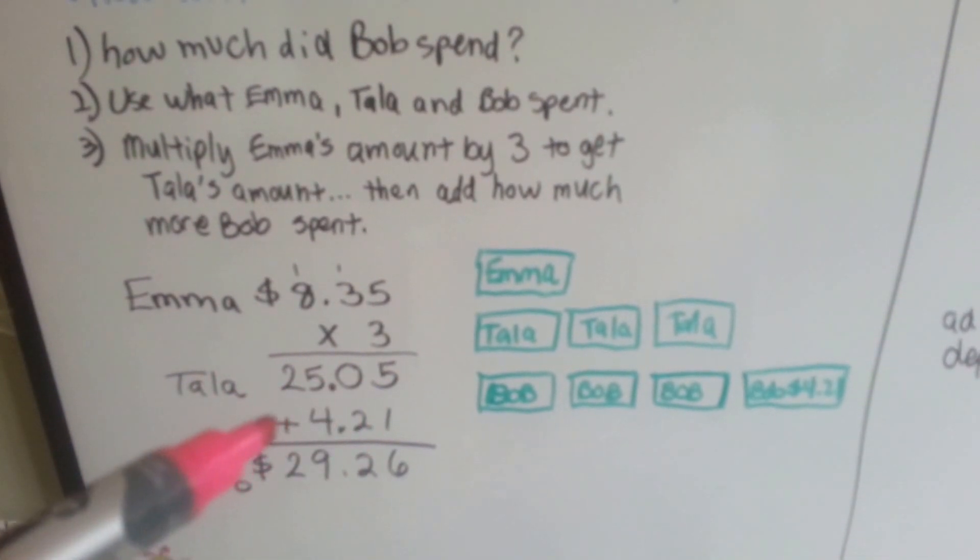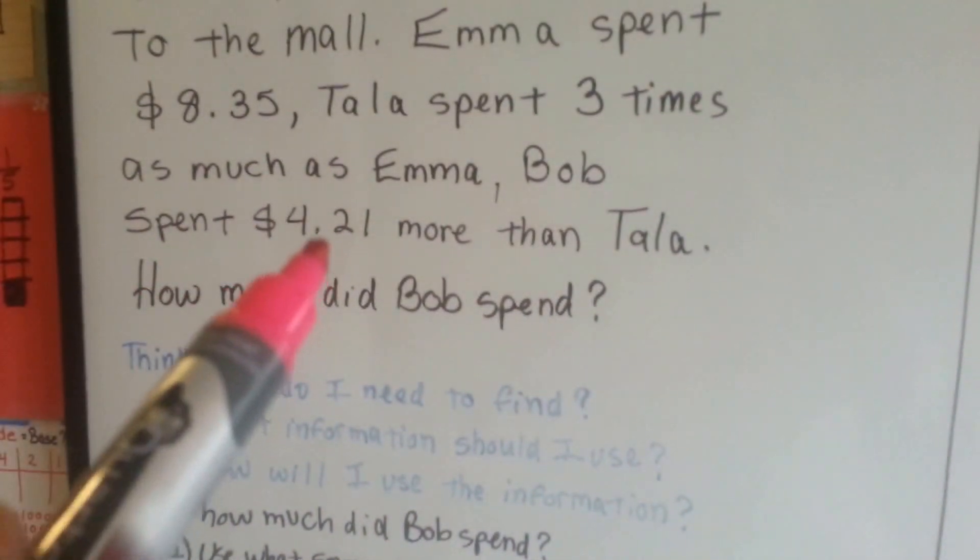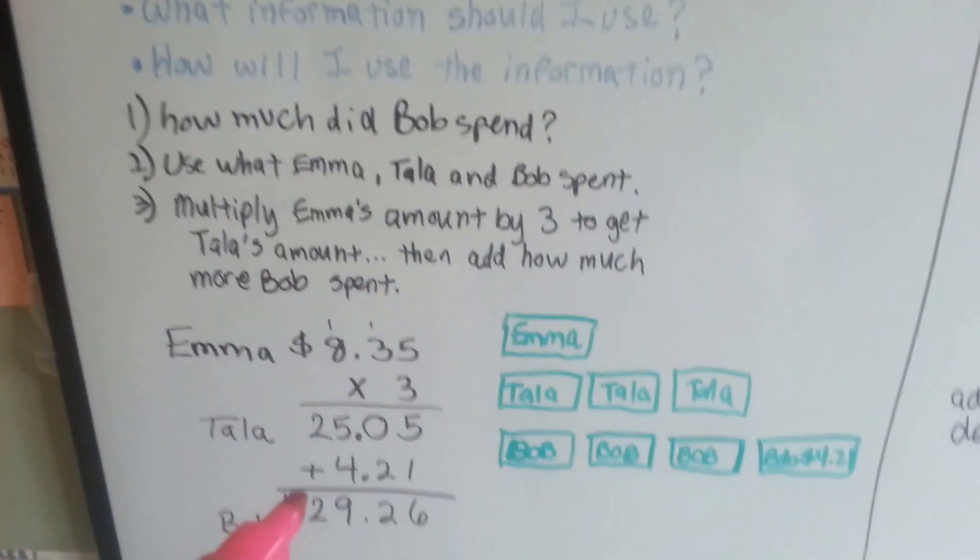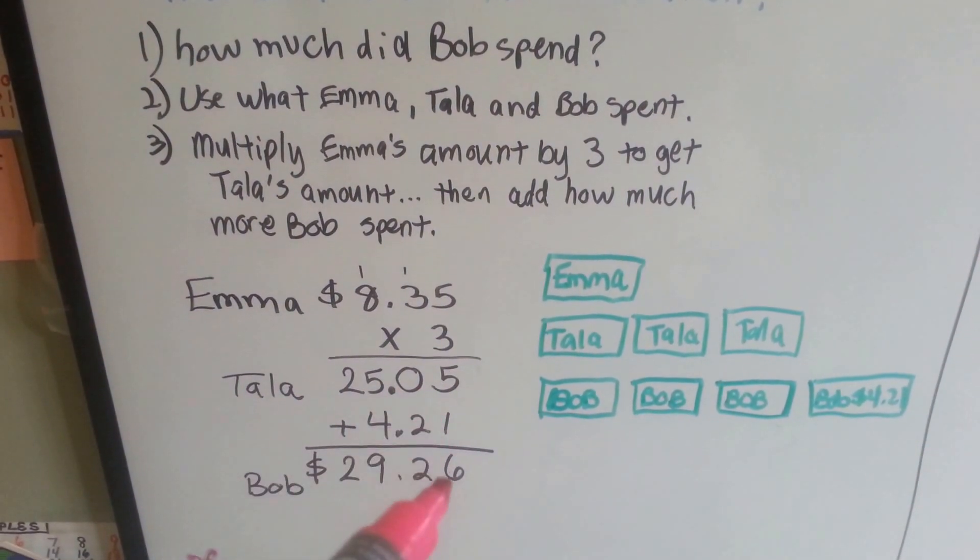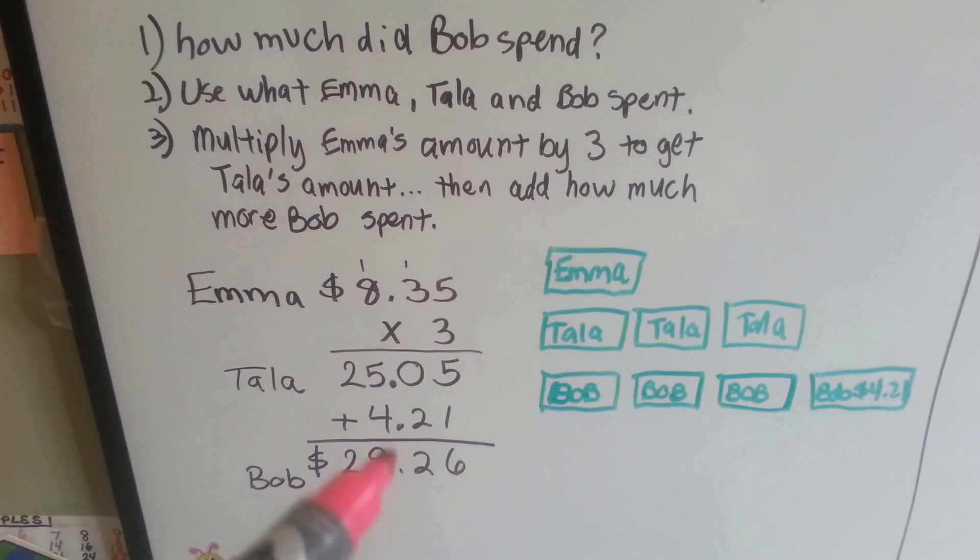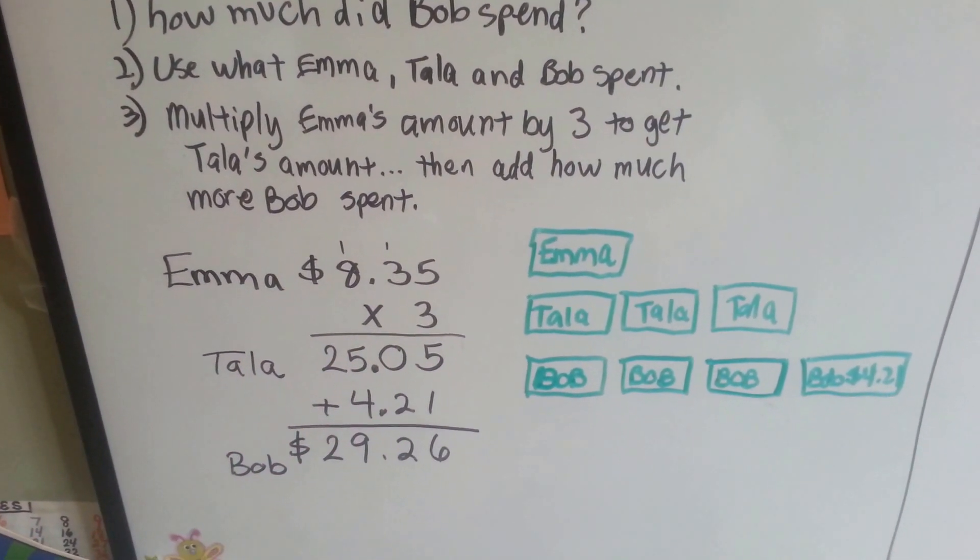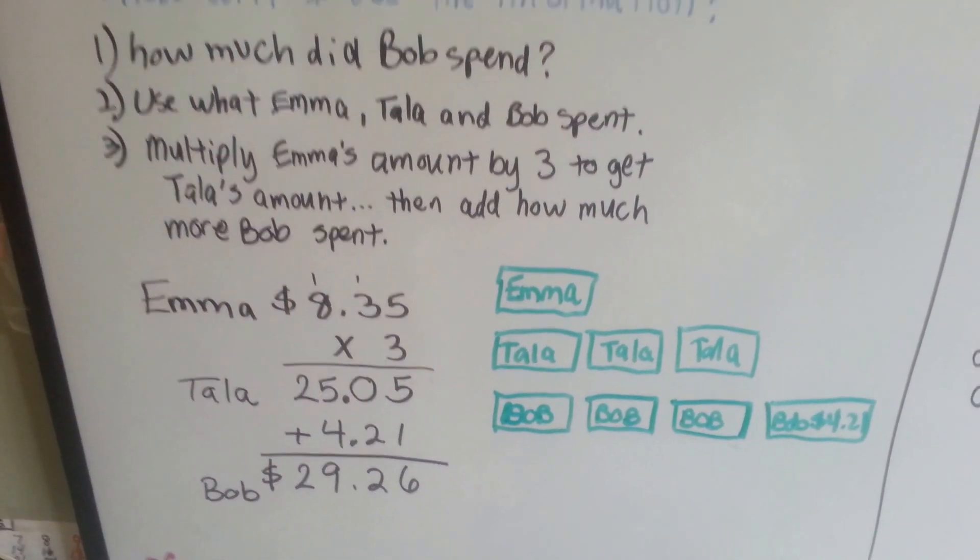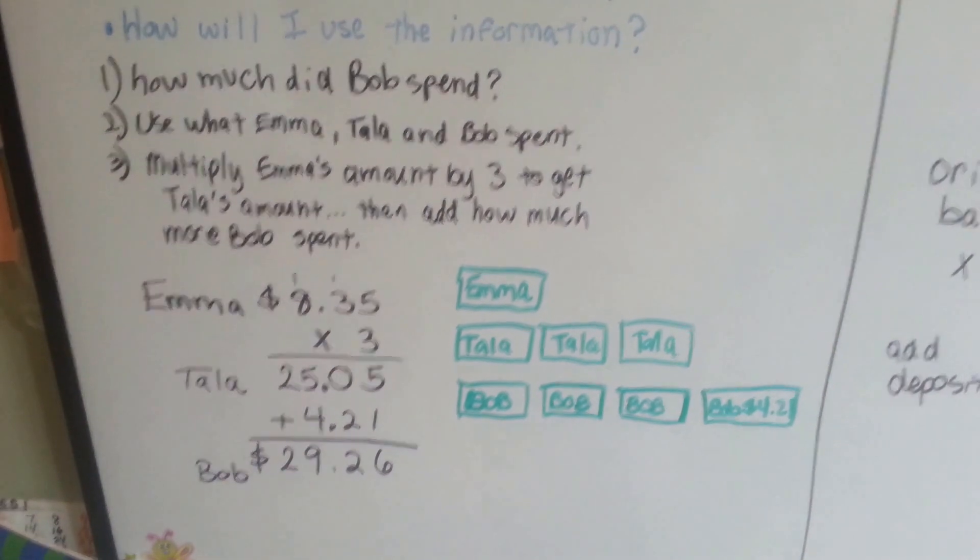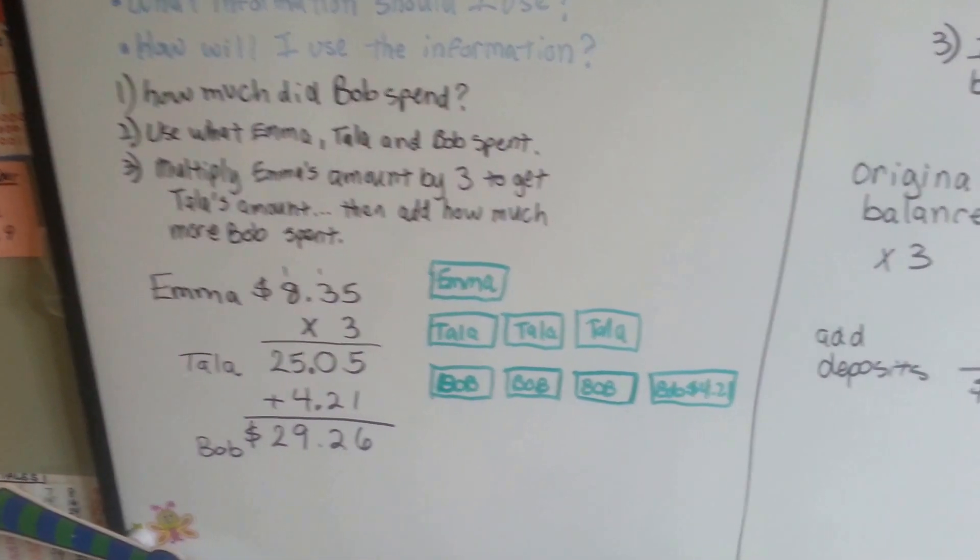Now we add the four dollars and twenty-one cents more that Bob spent than Tala. We add that to the twenty-five dollars and five cents. Five and one is six. Zero and two is two. Five and four is nine. We drop down the two and we know that Bob spent twenty-nine dollars and twenty-six cents. Just stacked them on top of each other and slowly figured out the information.